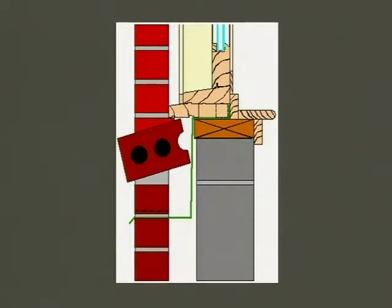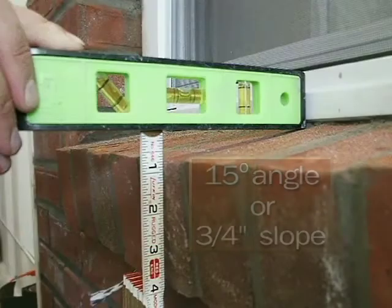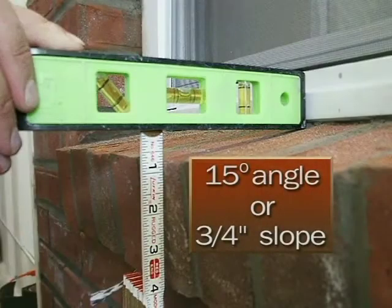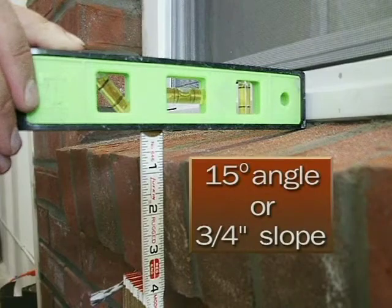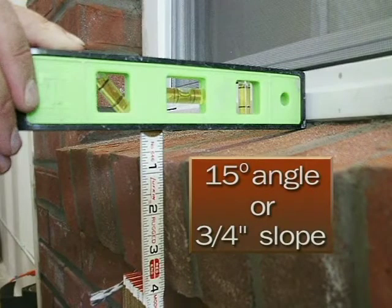Notice too that there is some fall on this sill. It's very important for your mason to make sure that this industry standard is at least closely adhered to. About a 15-degree fall or about three quarters of an inch will do the job. That way the water that the window collects coming down on the sill is directed off much more quickly.